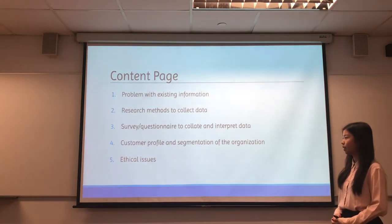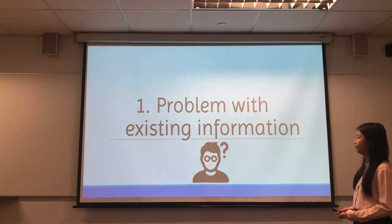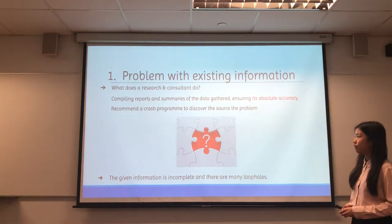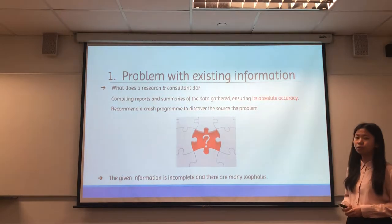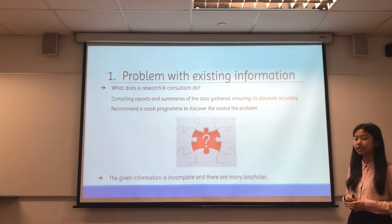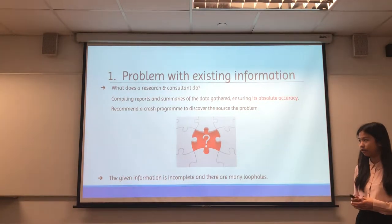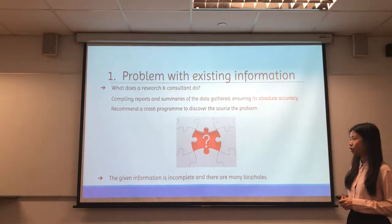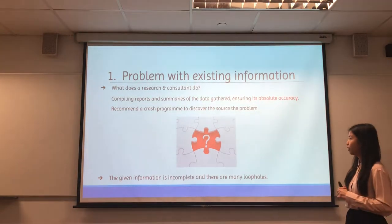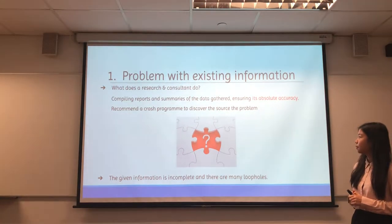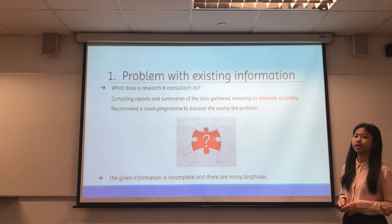We'll be covering these five topics and I'll be talking about the problem with existing information. Before that, let's talk about what a research consultant does. For research and consulting, they have to compile all the reports and summaries of the data, ensuring that the data is absolutely accurate. Their job is to recommend a program to discover the source of the problem. In order to do that, the existing given information is incomplete and there are many loopholes in it.